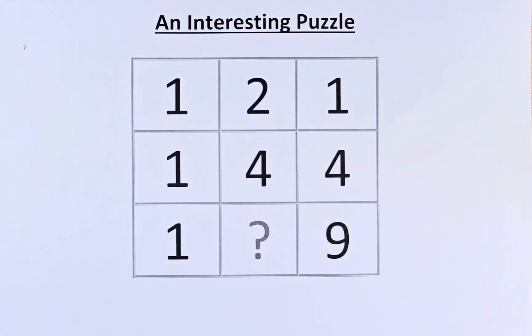In the first row, we have 1, 2, 1. Second row, we have 1, 4, 4. And in the final row, we have 1, a question mark and a 9.